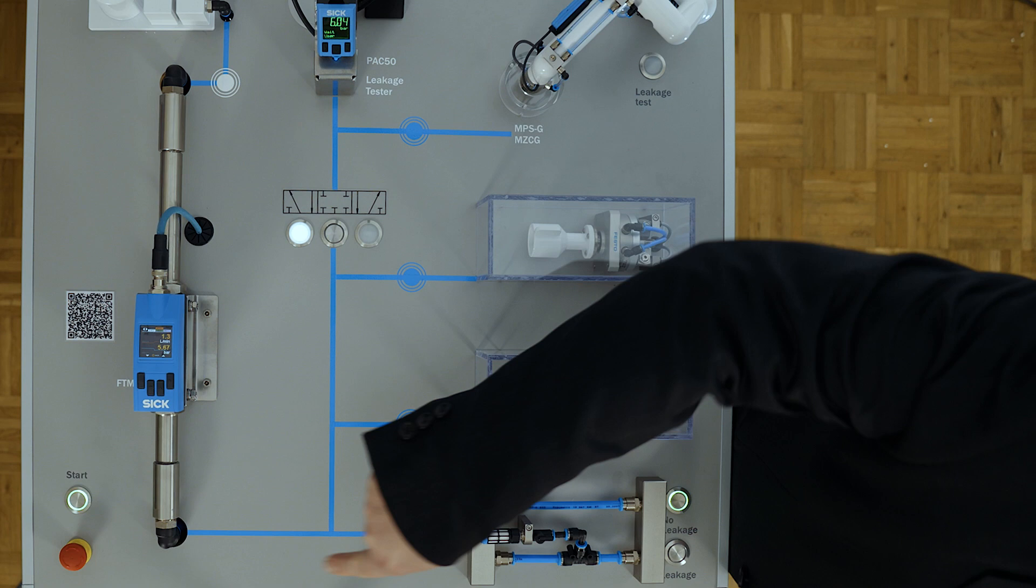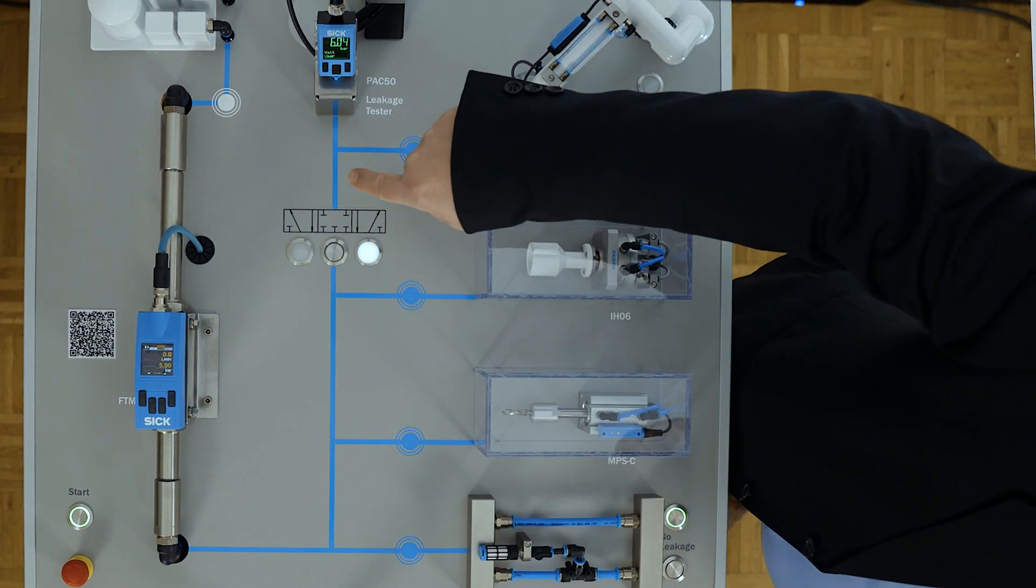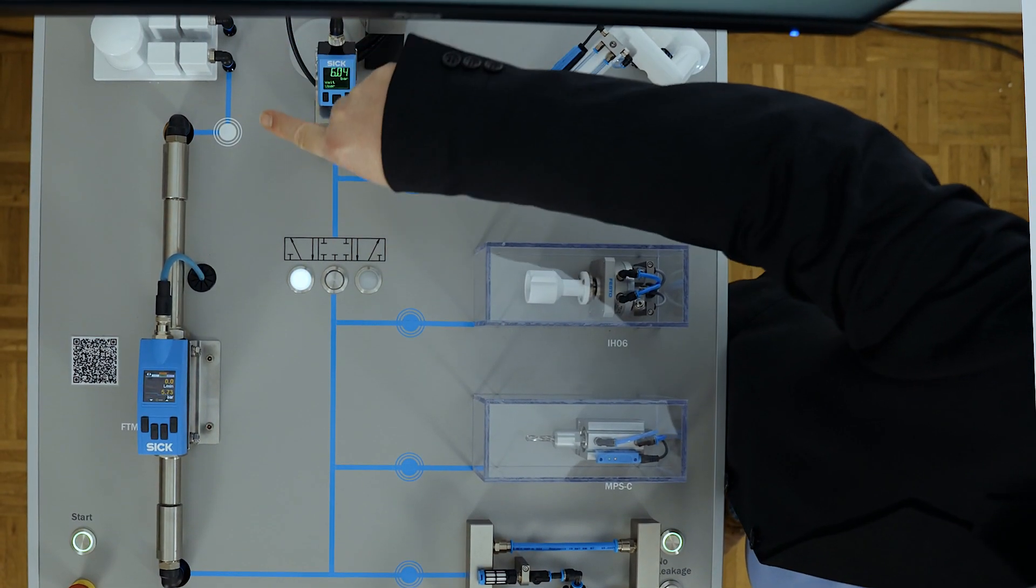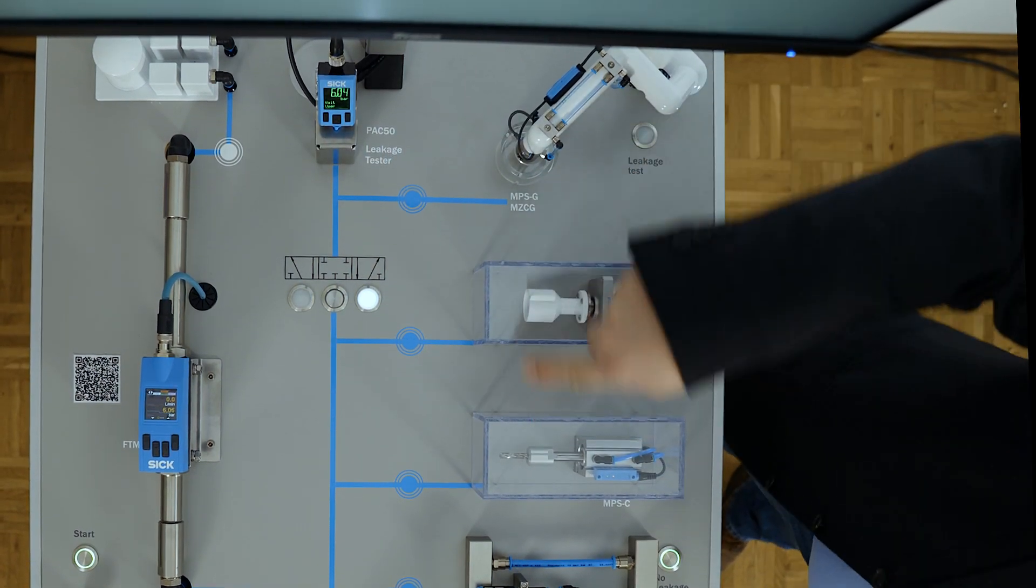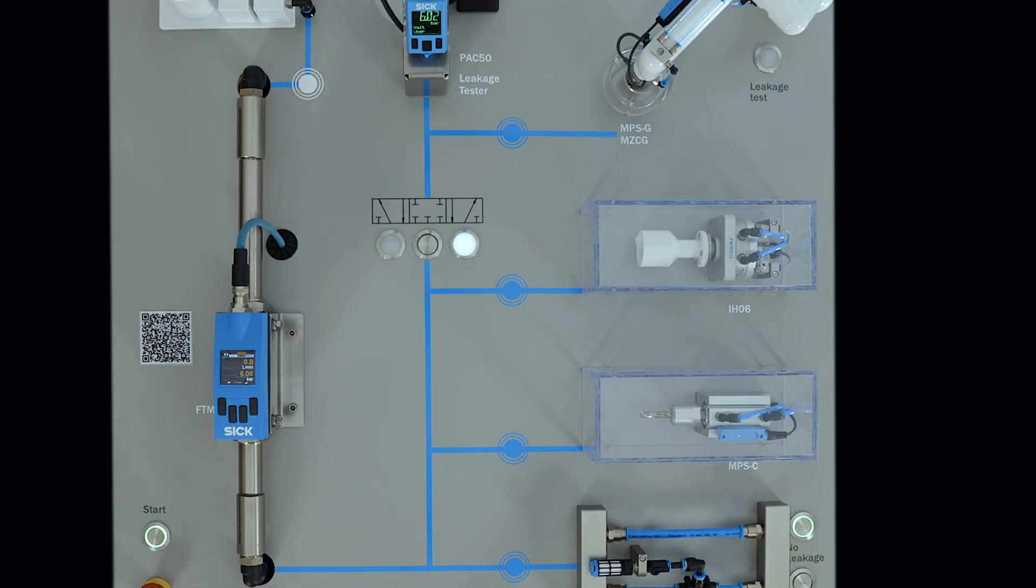The blue lines represent the compressed air lines from the compressed air generation to the individual consumers. The FTMG can be used both in the superordinate compressed air network as well as in the supply lines to the individual machines, shown by the blue circles.